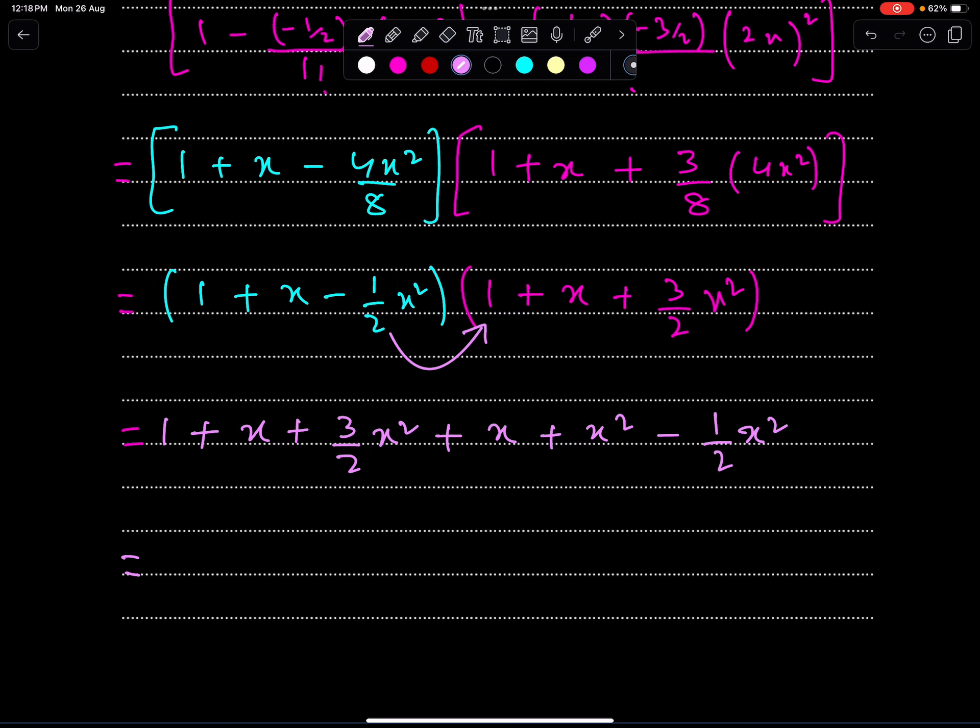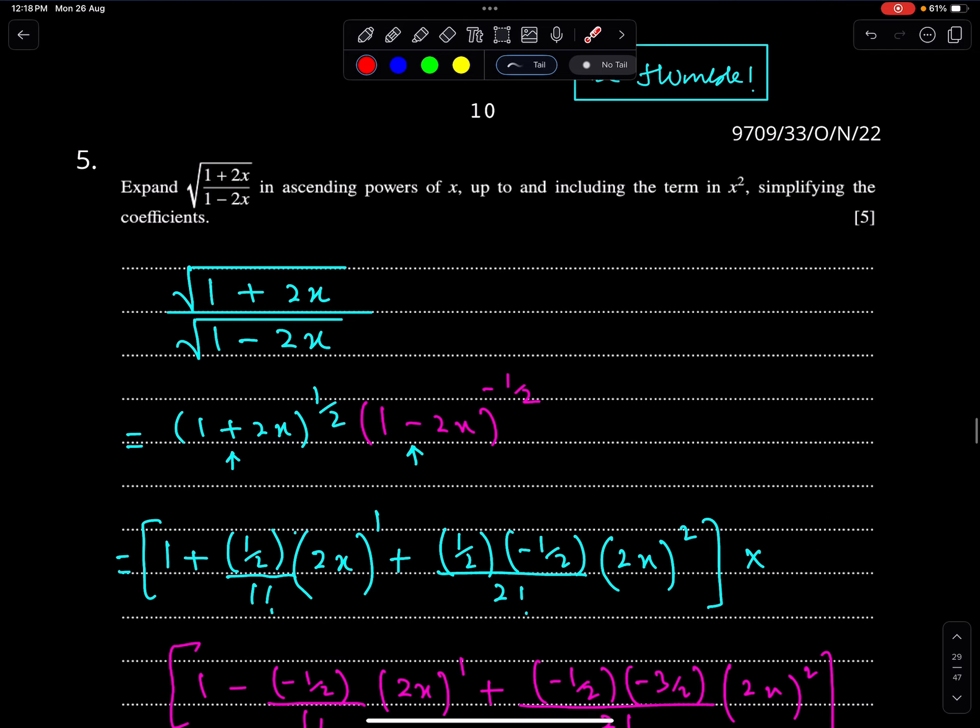Now finally, we have 1 plus 2x. This x and this x will become 2x. Well, this will become x squared and x squared, so finally we have 2x squared. So this is the required expansion or expanded form of this expression.